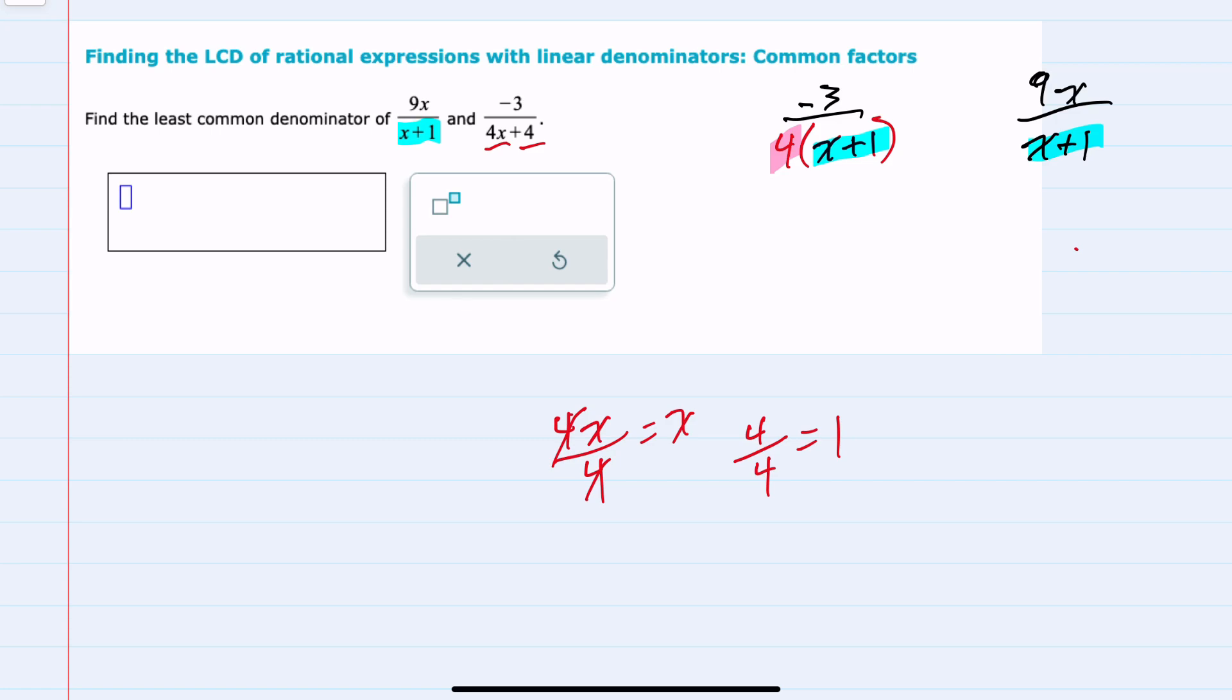My least common denominator would need to have all of those factors represented in it. So my least common denominator would need to have that x plus 1, and it would also need to have the 4.